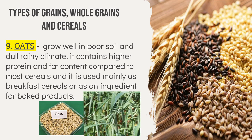The last type of grain is oats. They grow well in poor soil and contain higher protein and fat content compared to most cereals, and are used mainly as breakfast cereals or as an ingredient for baked products. Oats are a cereal plant cultivated chiefly in cold climates and widely used for both animal feed and human consumption, commonly made into biscuits or porridge.